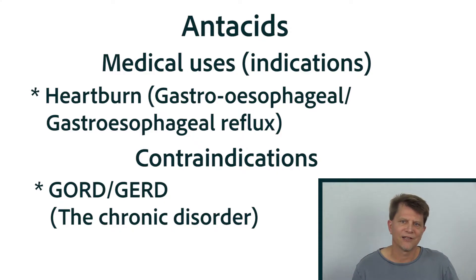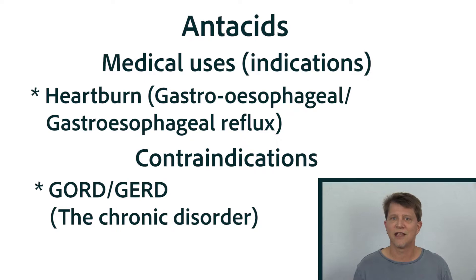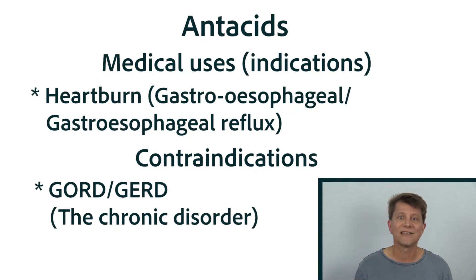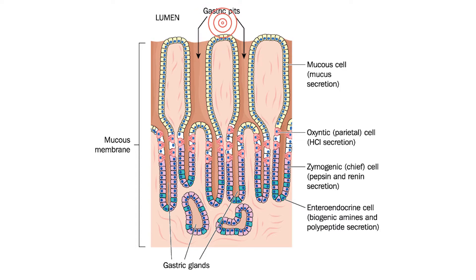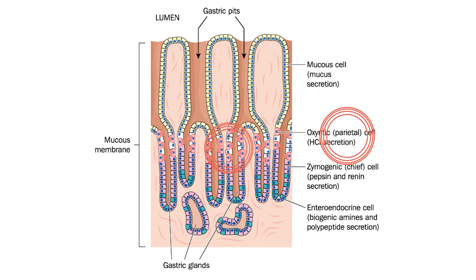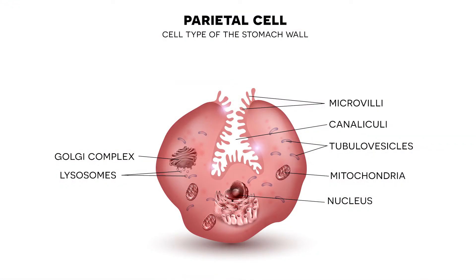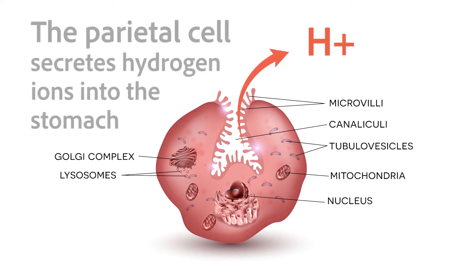Let's go back to the normal anatomy and physiology, and then to the pathophysiology — the disordered physiology that occurs in gastroesophageal reflux disease — so we can understand the safety concerns of antacids and when they are best used. If we could zoom into the lining of the stomach, we'd find that the stomach wall has gastric pits, and those gastric pits have different cells. One type is called a parietal cell, which secretes various products into the stomach.